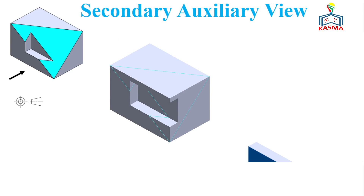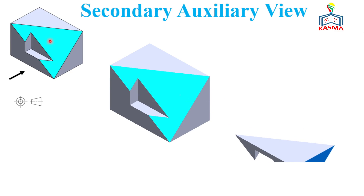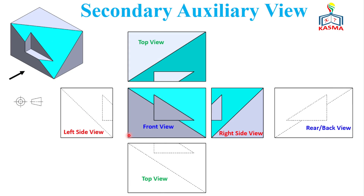This video mainly focuses on secondary auxiliary view. Secondary auxiliary view is used when we have an oblique surface on the given object. If we have a surface with an oblique surface, we don't have an exact size and shape on either of the six principal planes, so to get the exact size and shape of the surface we have to use the secondary auxiliary view. I will show you all the basic steps to construct it.